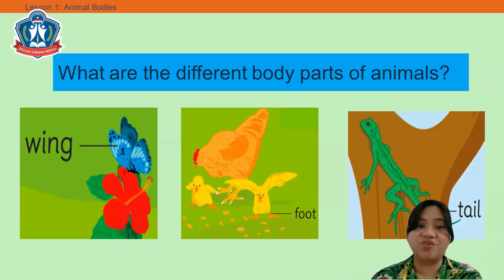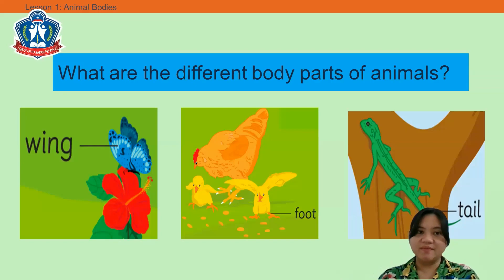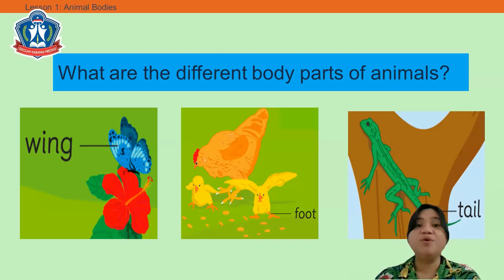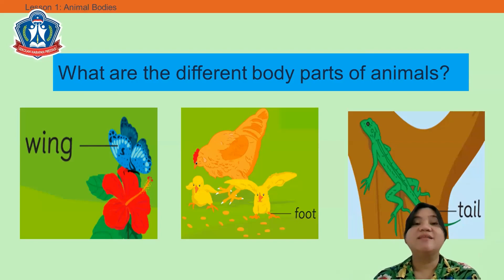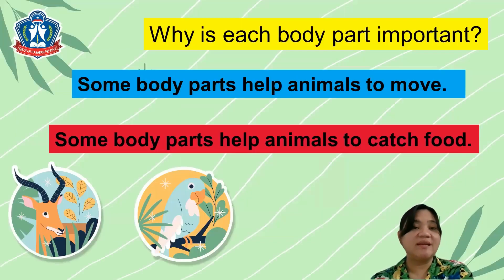Please look at the pictures. What are the different body parts of animals? Picture one — wing. Second — good job. And the last — tail. Good job!